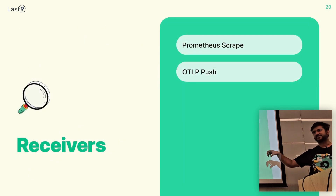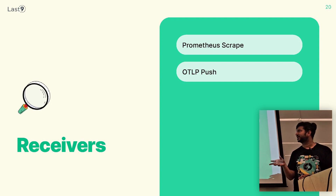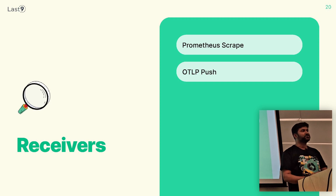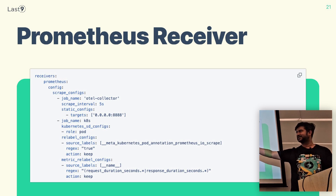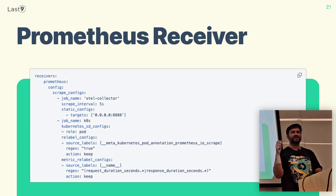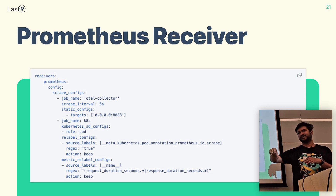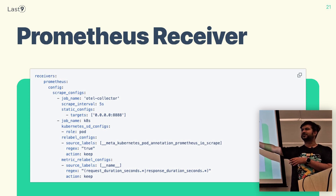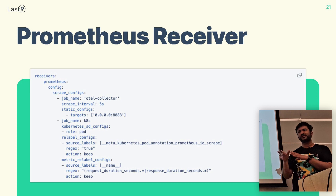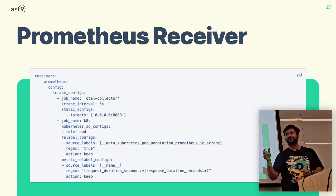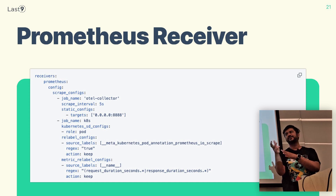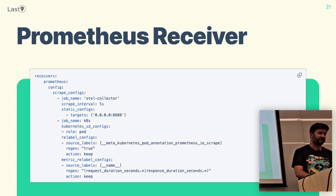Let's talk about each component in detail. For receivers, there are two primary types: Prometheus scrape and OTLP push. The scraper is very similar to Prometheus — those who use Prometheus will find this familiar. It's a YAML configuration for service discovery, relabel configs, and so on. This works as-is in OTel as well; you just copy your existing Prometheus configuration and put it under the OTel YAML file and it will work. You can scrape metrics from your existing components using the OTel collector. The advantage is that using the same OTel collector, you can also collect traces and logs from other services and combine them together before pushing to the destination.